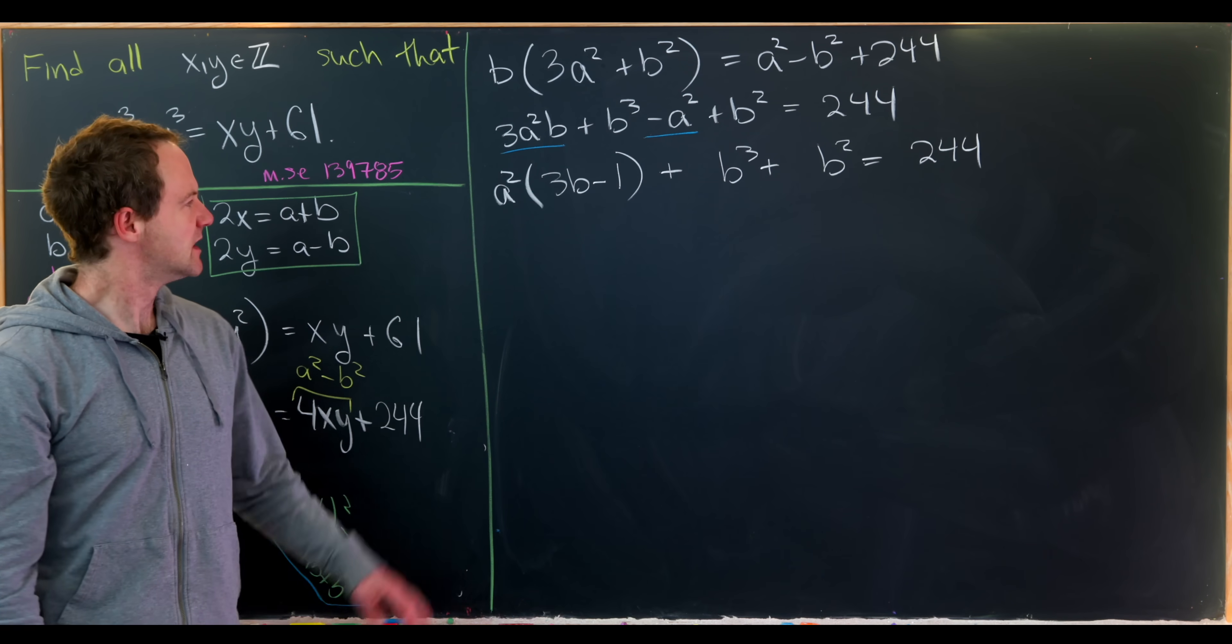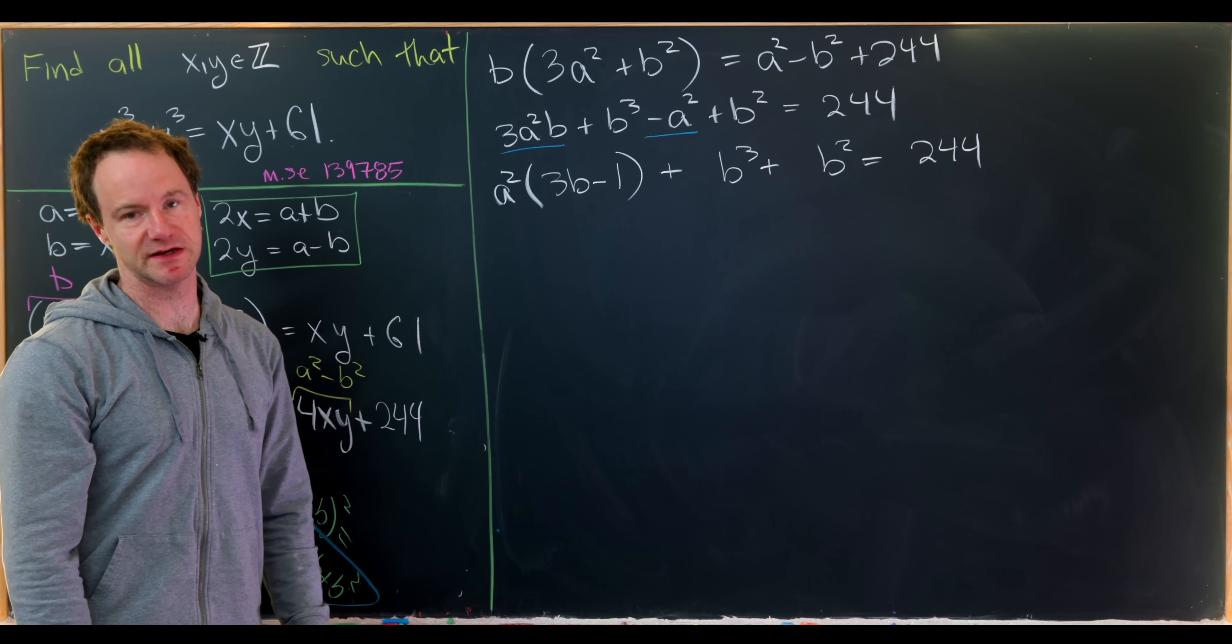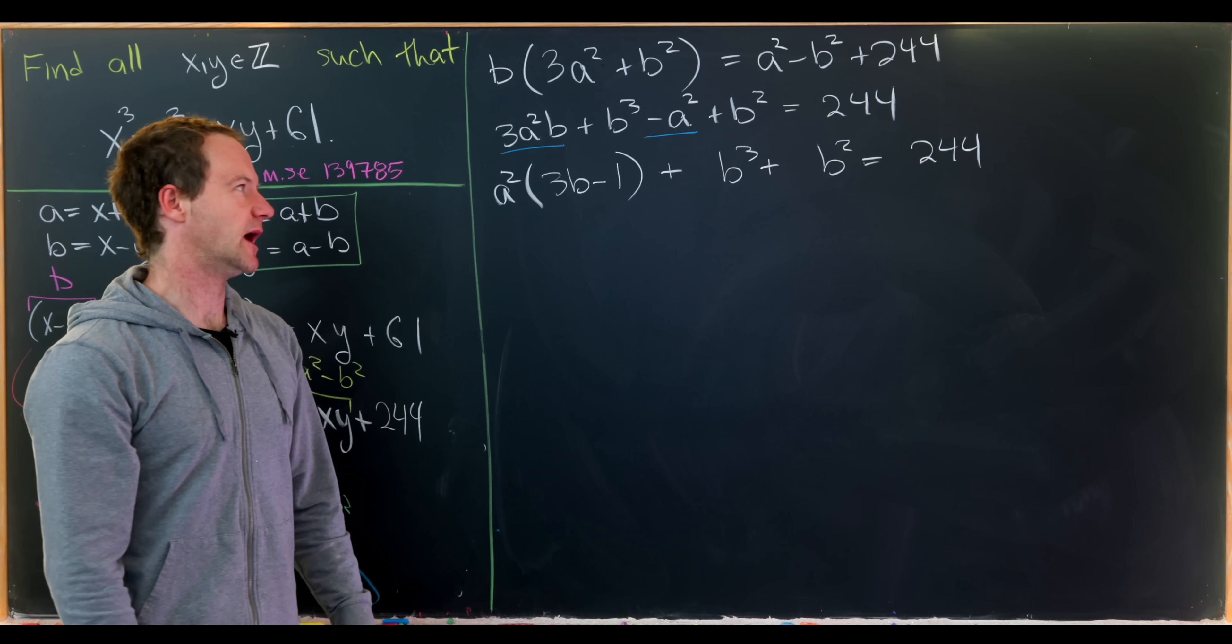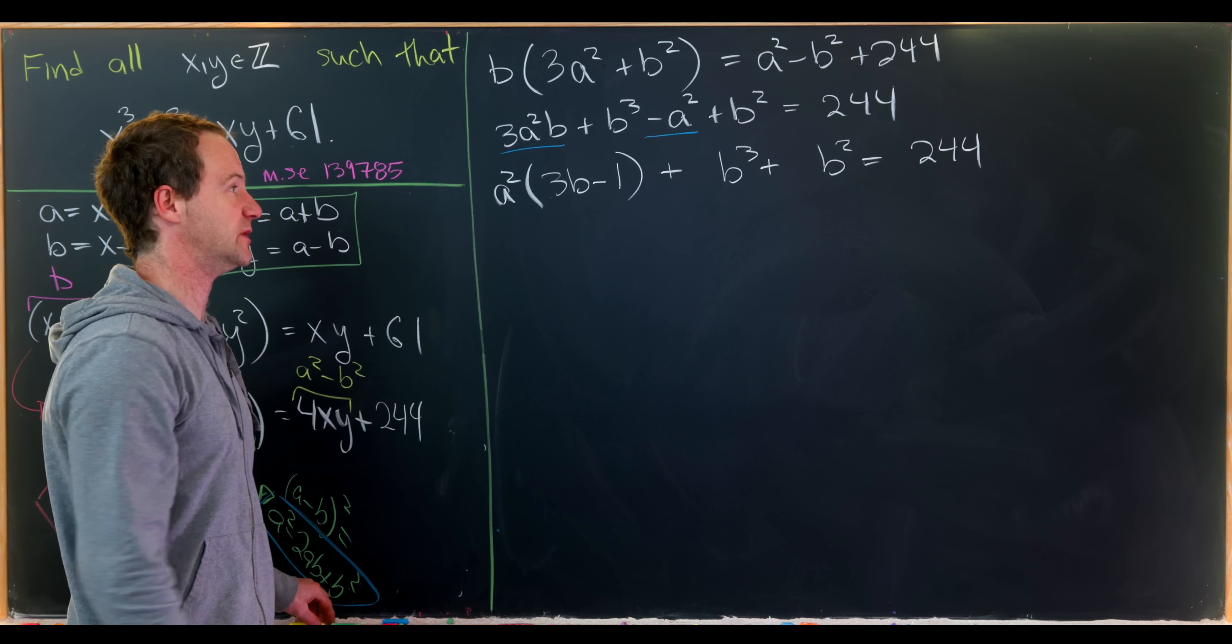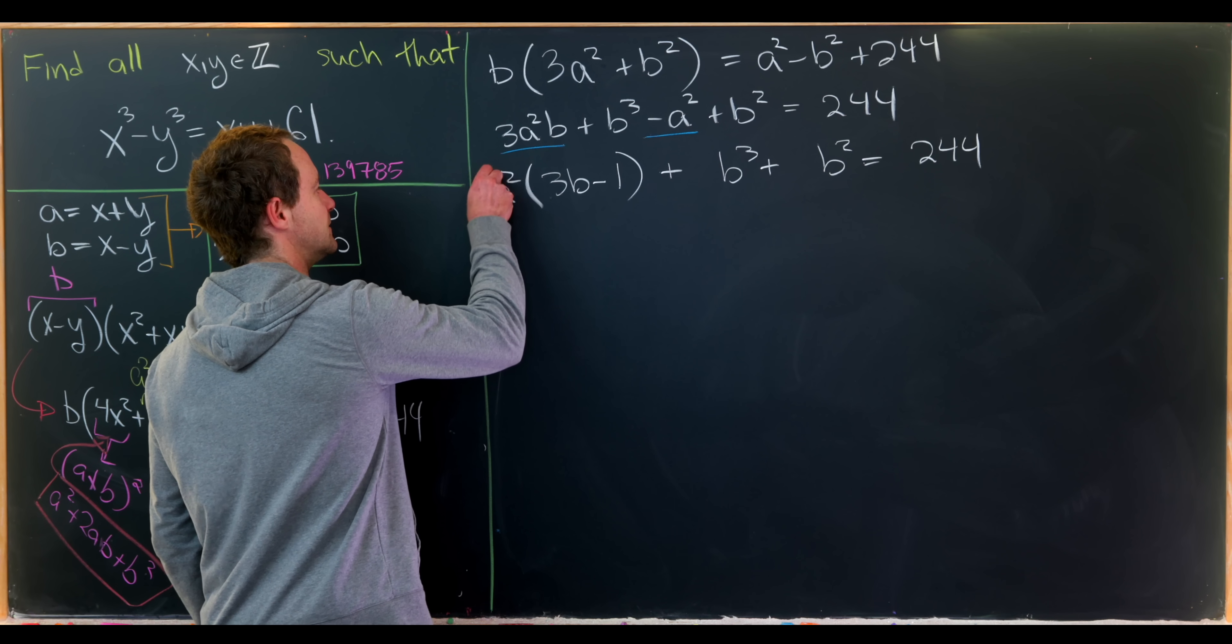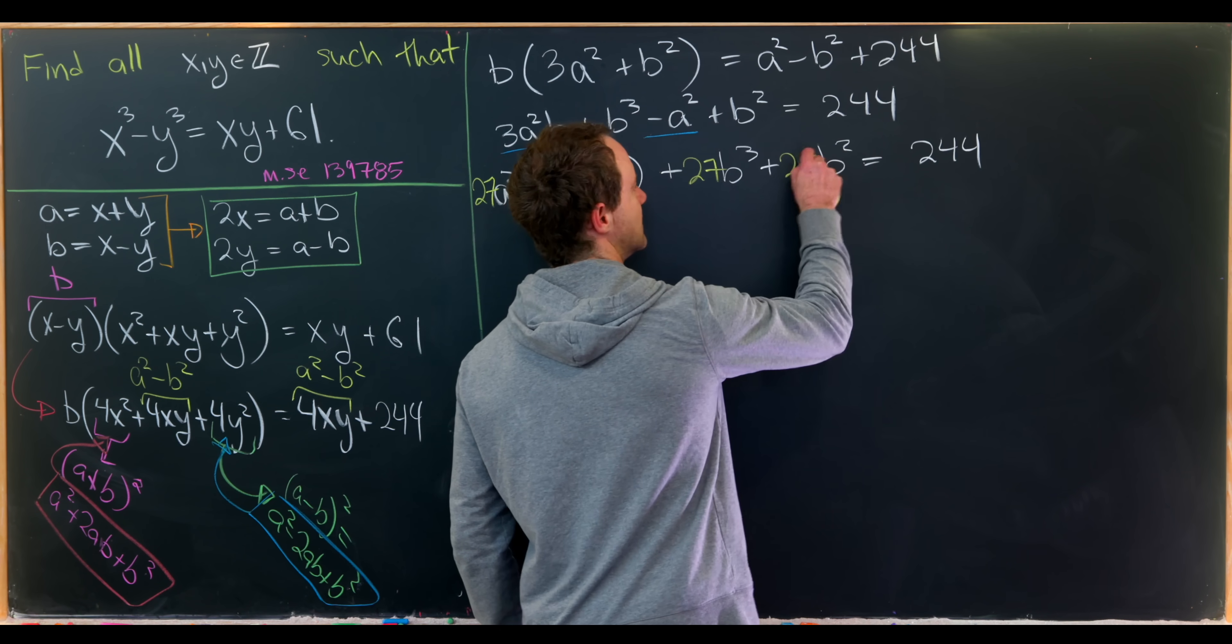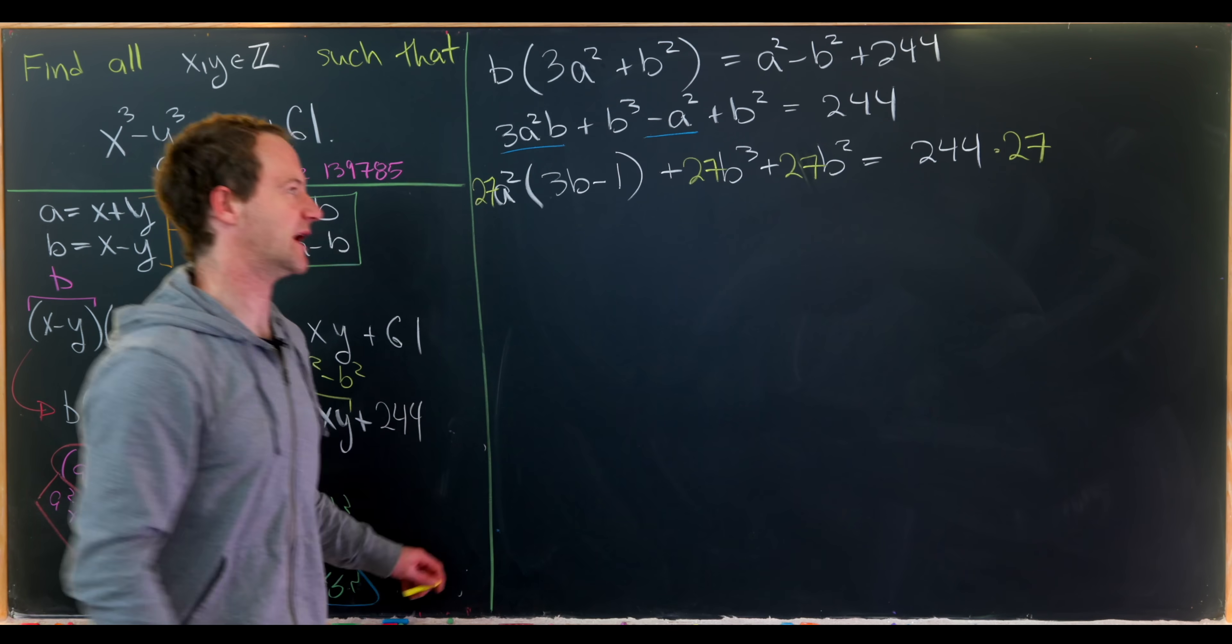That sets us up to think about dividing by b times 3b minus 1. But in order to do that nicely we probably want some coefficient in front of b cubed. Motivated by the fact that we have a 3 here, perhaps we want 3 cubed in front of b cubed. So that means we should multiply this whole thing by 27. We'll multiply this by 27, this by 27, and the other side of the equation as well by 27.